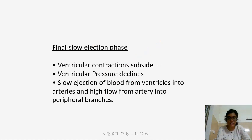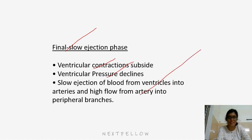In the final slow ejection phase, ventricular contractions subside, ventricular pressure declines, and there is slow ejection of blood from the ventricles into the arteries and flow from the arteries to peripheral structures.